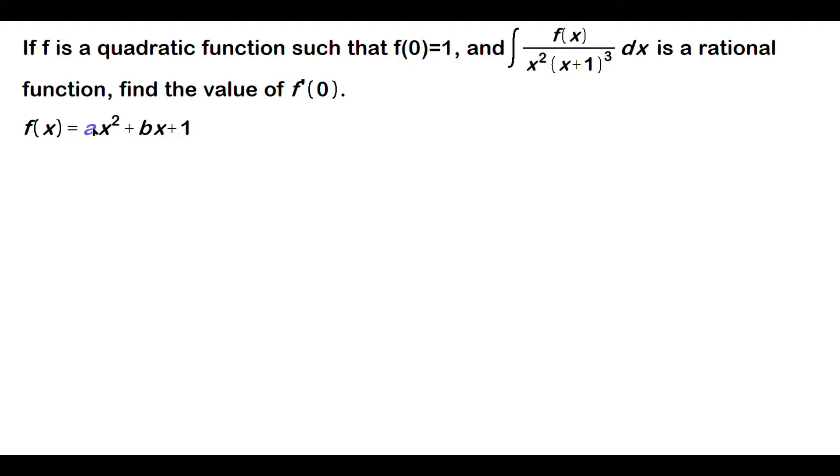If you replace x with 0, you would have a times 0 squared plus b times 0 plus 1. Now that that is settled, look what happens when you differentiate this expression on the right side. By the power rule, it's 2ax plus b.